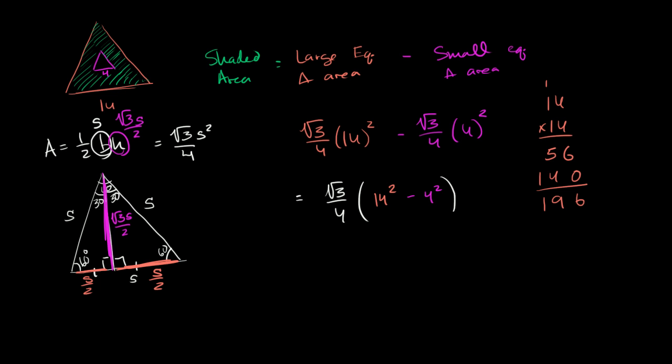So this is equal to square root of 3 over 4 times 196 minus 16, which is equal to 180.